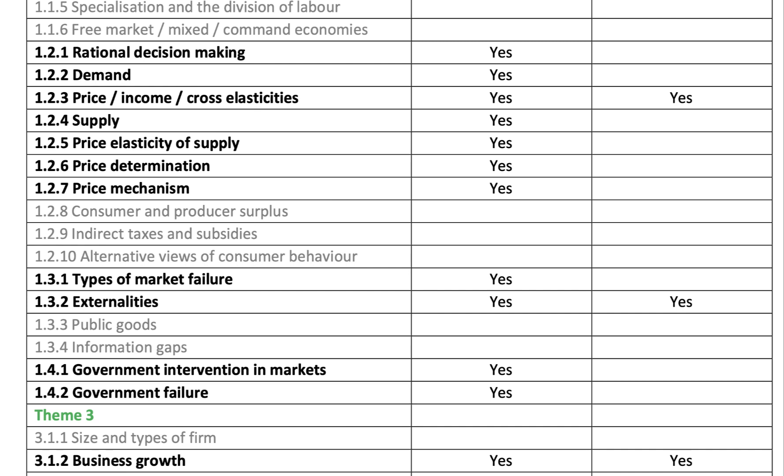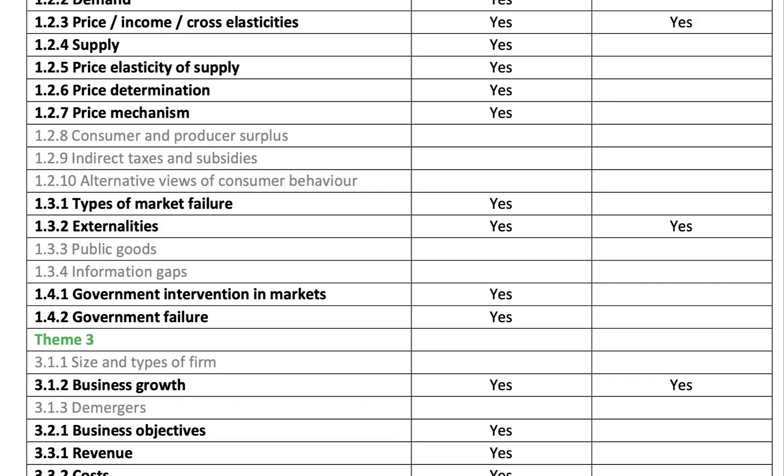With market failure, there are quite significant changes. They've included externalities — positive and negative — in both paper one and paper three. So externalities should form an absolutely key part of your revision: those externalities diagrams, the idea of social welfare losses, and crucially the types of government intervention in markets that could help correct for market failures. Types of market failure are included, but they've taken out public goods and information gaps — those two topics will not be the subject of specific questions in the exams. Please do revise government failure — that's going to be a key aspect.